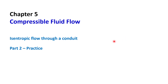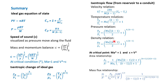Let's do some practice for isentropic flow through a conduit. Before we go into solving equations, let me summarize what we have learned so far: the ideal gas equation applicable for high velocity compressible gas, equation of state, the Cp and Cv relationship, and the speed of sound equation. We also derived the isentropic expansion of ideal gas equations.